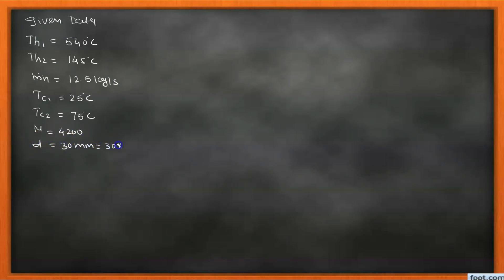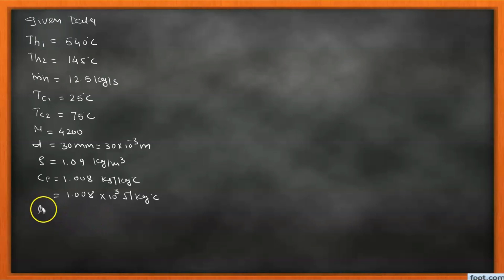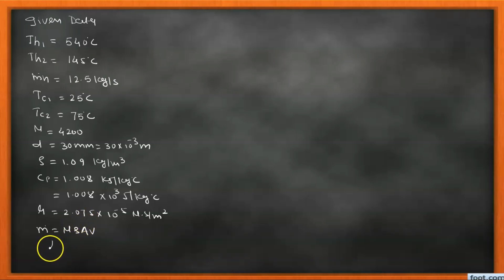The number of tubes in the heat exchanger is 4200, and the diameter of each tube is 30 mm = 30 × 10⁻³ m. The density is 1.09 kg/m³, Cp = 1.008 kJ/kg°C, which we convert to 1.008 × 10³ J/kg°C. The viscosity μ = 2.075 × 10⁻⁵ N·s/m². The mass flow rate formula is ṁ = N × ρ × A × V, and water side resistance is negligible.